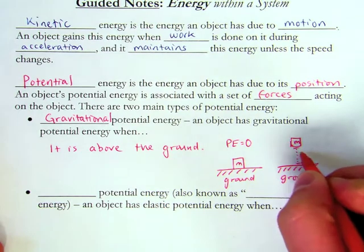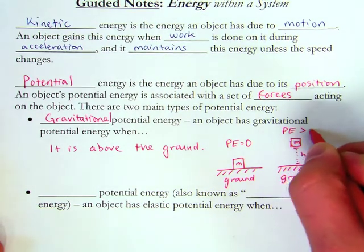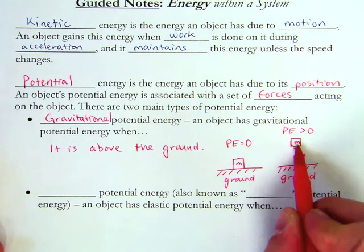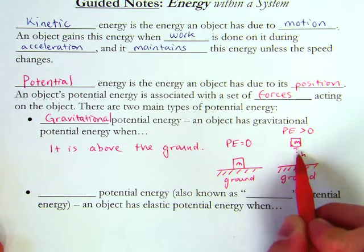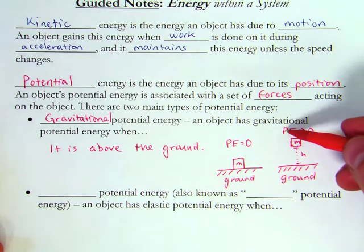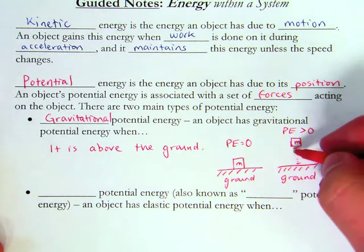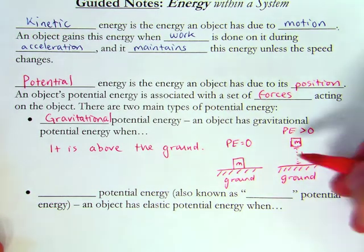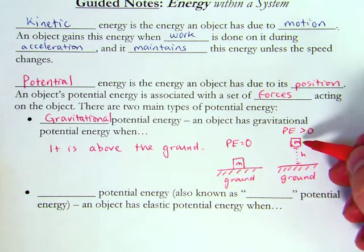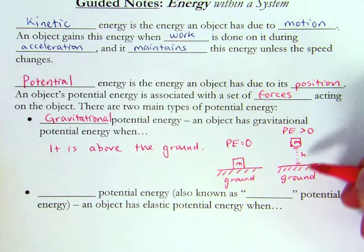In this situation, the potential energy would be greater than zero, because the object is above the ground. So the potential basically means if you let go of this object, it'll fall straight down. That energy has the potential to turn into kinetic energy if you loosen it.